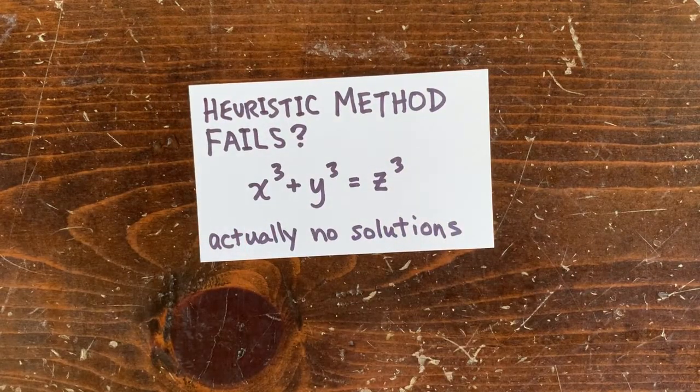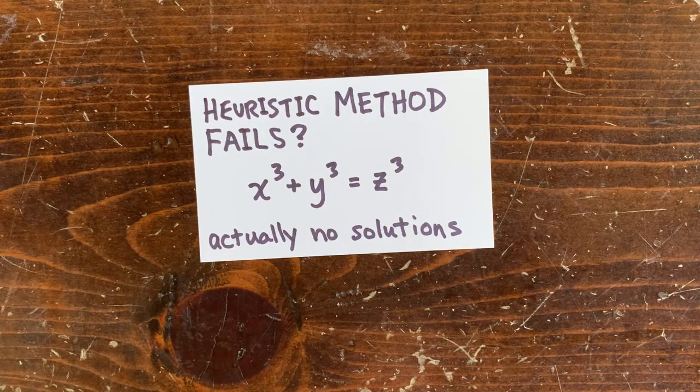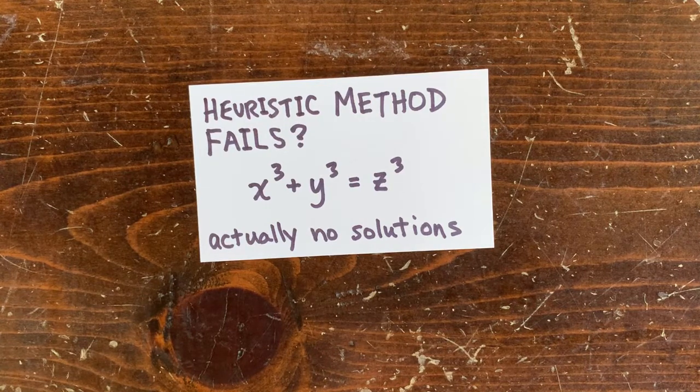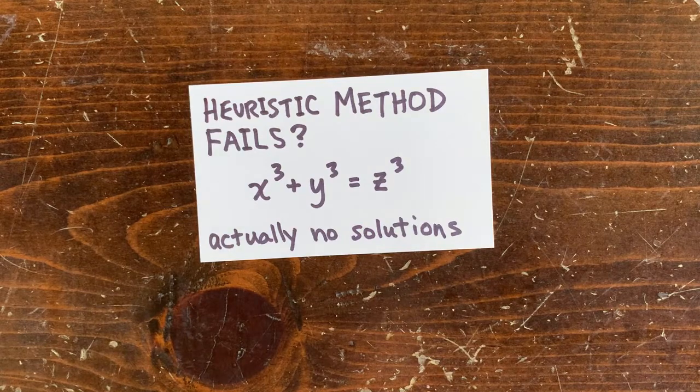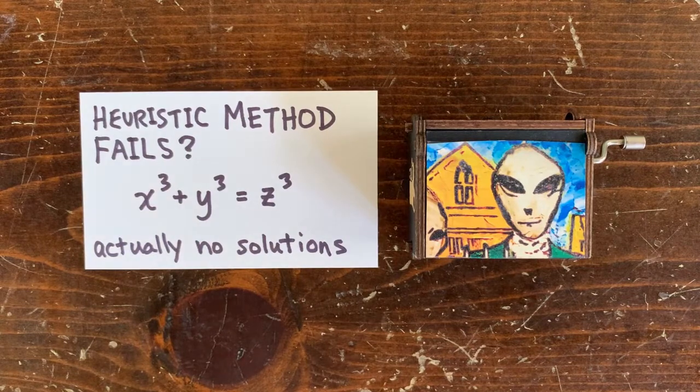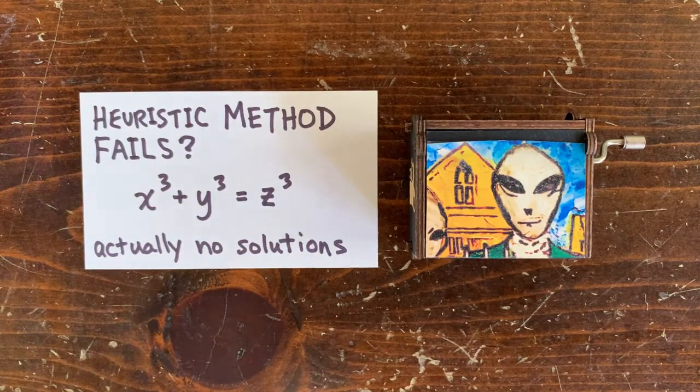But sometimes this heuristic expectation method doesn't work. So for example, one simple heuristic predicts that there should be an infinite number of solutions to x cubed plus y cubed equals z cubed. But there aren't an infinite number of solutions. In fact, there aren't any solutions. So in this case, there's something wrong with our assumptions about how the cubes are distributed down the number line. It's not random.